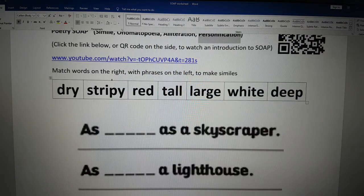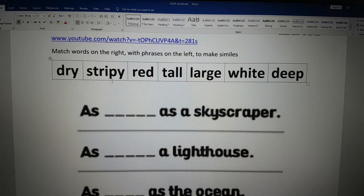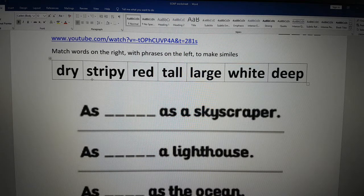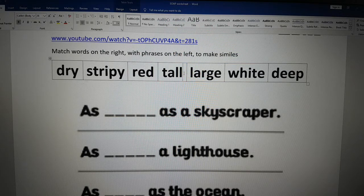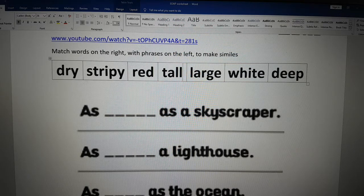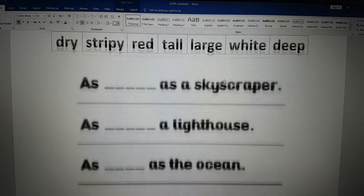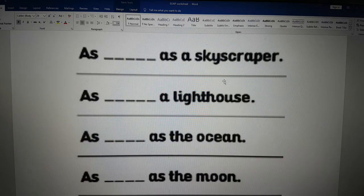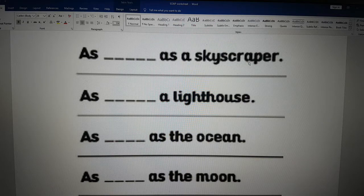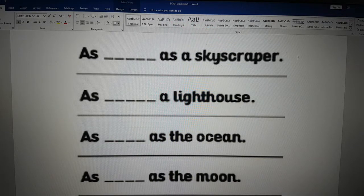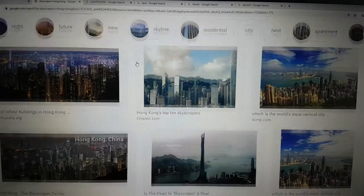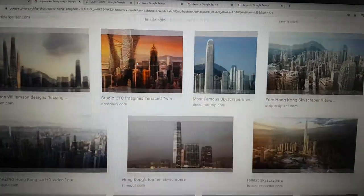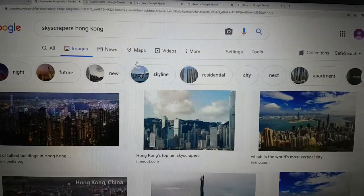The first part we're going to match some words which are similes. You have the words dry, stripy, red, tall, large, white and deep. And you need to match these to these sentences here. As what as a skyscraper? If you don't know what a skyscraper is, here are some pictures of skyscrapers, very tall buildings in Hong Kong.